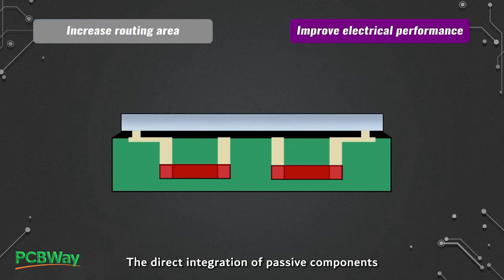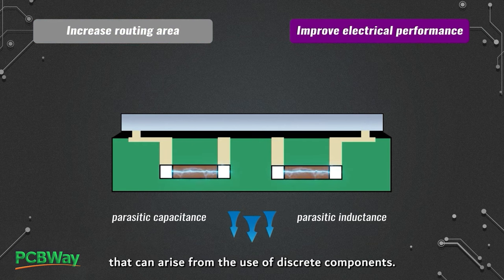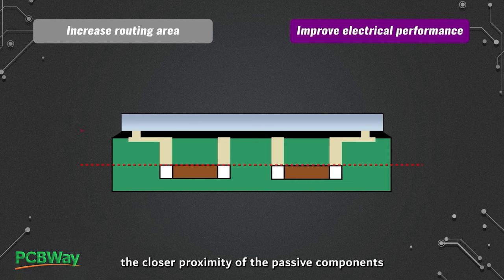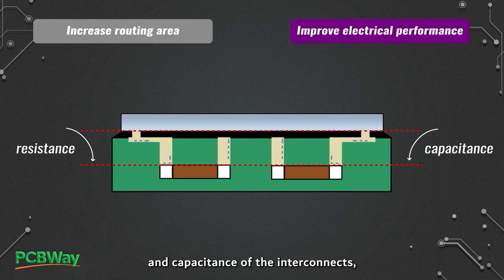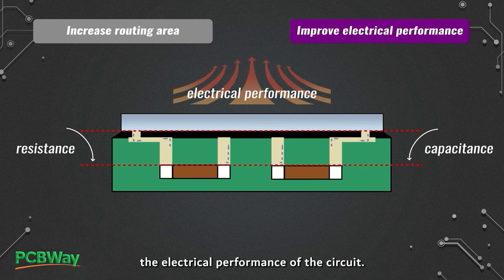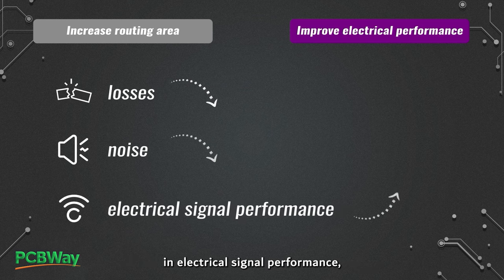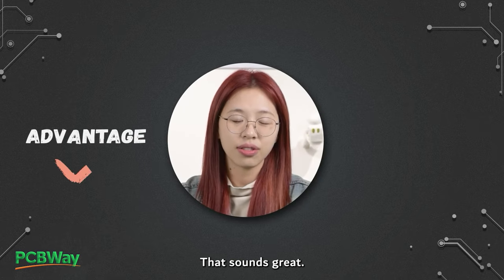The direct integration of passive components into the substrate reduces the parasitic capacitance and inductance that can arise from the use of discrete components. Additionally, the closer proximity of the passive components to the active components on the PCB can reduce the signal path length and therefore reduce the resistance and capacitance of the interconnects, which can also improve the electrical performance of the circuit. Reduced losses and noise yield an improvement in electrical signal performance, especially at high frequencies.